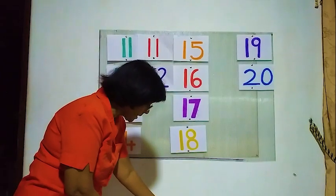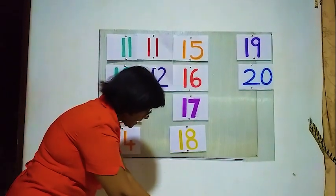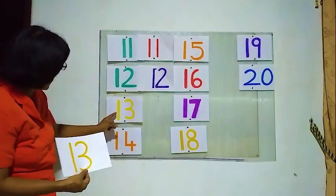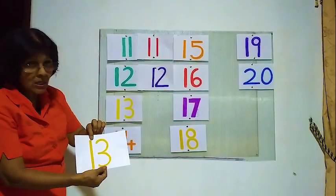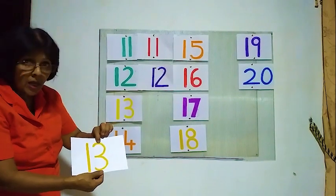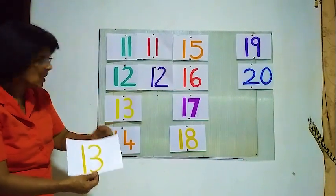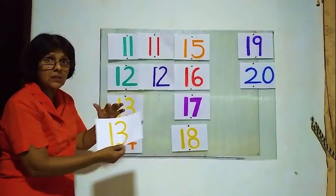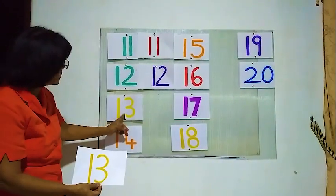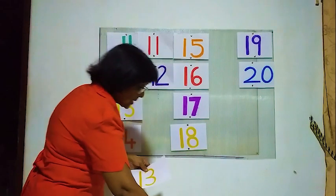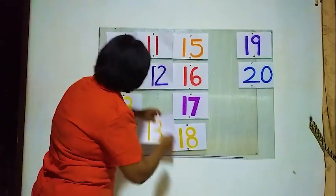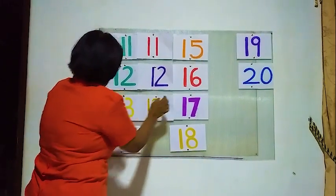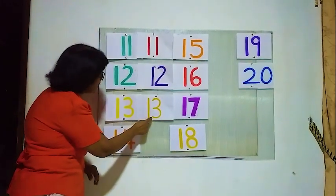We have to find number 13. Is this correct? 1 and 3, 1 and 3 — yes! This is 13, this is also 13. This is correct. We will fix it here — number 13, number 13, number 13.